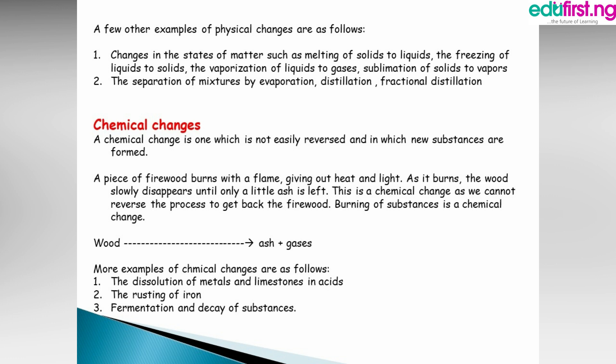Now, what is a chemical change? A chemical change is one which is not easily reversed and in which new substances are formed. For example, a piece of firewood that burns with a flame gives out heat and light; as it burns, the wood slowly disappears into gas until only a little ash is left. We cannot reverse this process to get back the firewood. Burning of a substance is a chemical change, also called a combustion reaction.